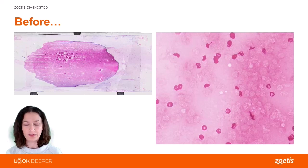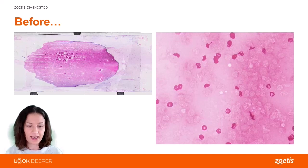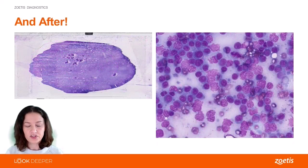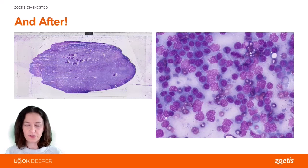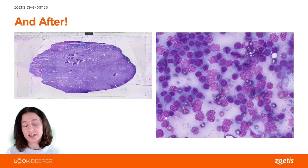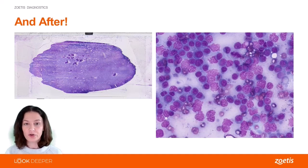We were able to do that with this sample. Pay attention to the spread — we've got little islands of cells. On the next image, it's the exact same slide, the exact same distribution, the exact same little islands of cells, but with the restaining, look how beautiful that is. I now have contrast between the red cells — they're a pale orange in the background — and my nucleated cells are a very nice purple blue. We were able to go from a non-diagnostic understained sample to actually getting a diagnosis of lymphoma for this patient.